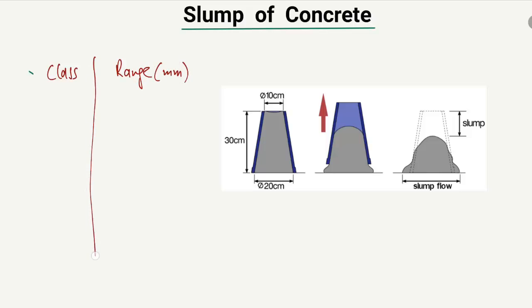S1 is the class where the range of the slump is from 10 millimeters to 40 millimeters. This means the height of the concrete after we remove the slump cone is in the range of 10 to 40 millimeters, and this is known as the S1 class.